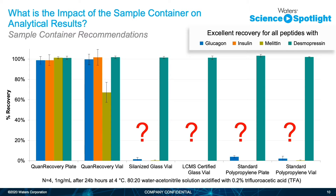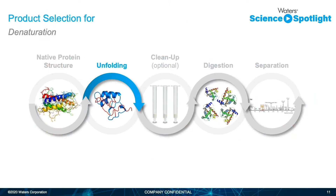We can see that every peptide will suffer from nonspecific binding loss at some point. Desmopressin is behaving very well across a variety of containers, with great recovery across all of them. That's not necessarily true for the other three peptides — we've got great recovery in the Quan Recovery containers, but we lose nearly all of the glucagon in the other containers and absolutely all of the insulin and melatonin. Quan Recovery helps stabilize the samples over those long injection cycles, and can also aid in protecting samples during sample preparation.